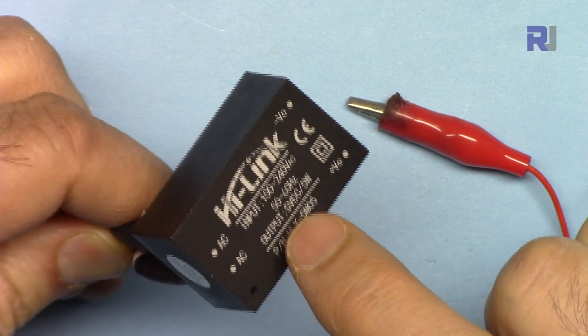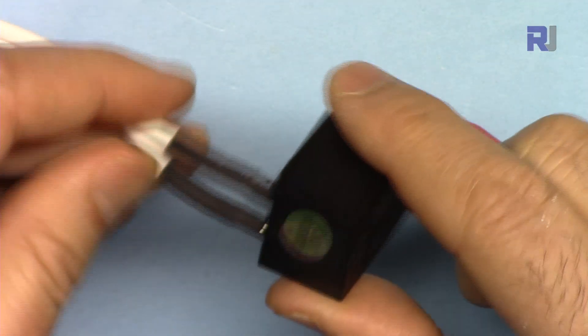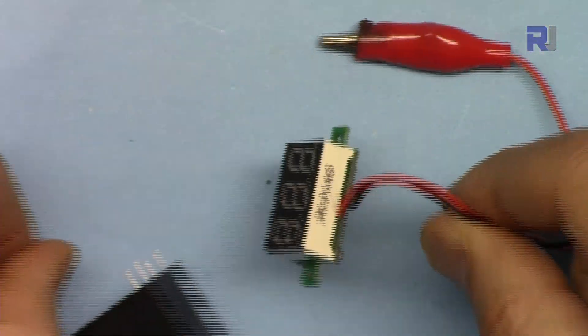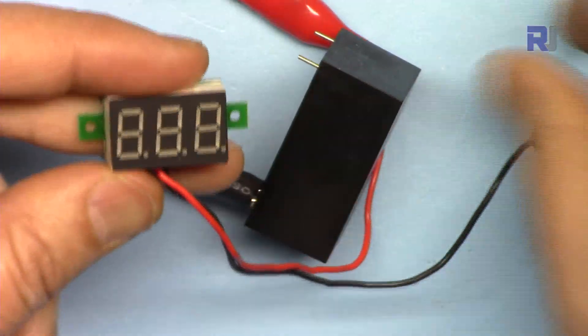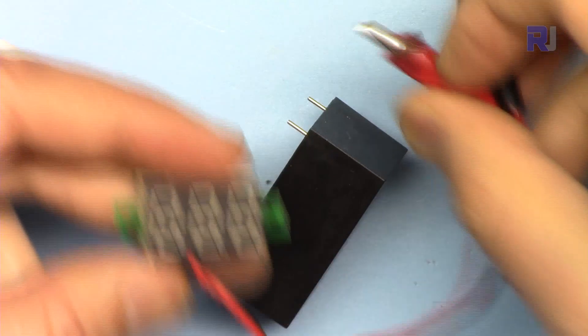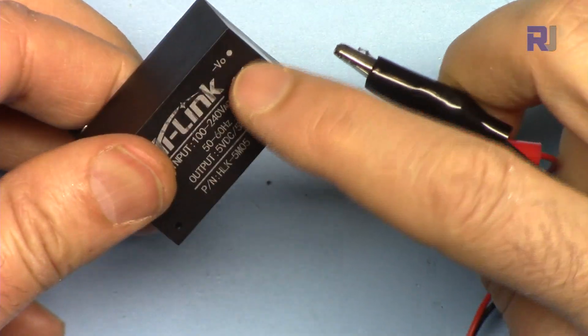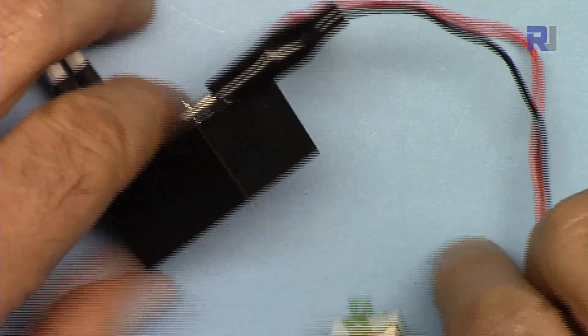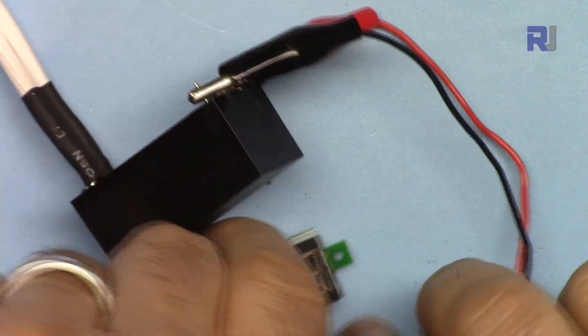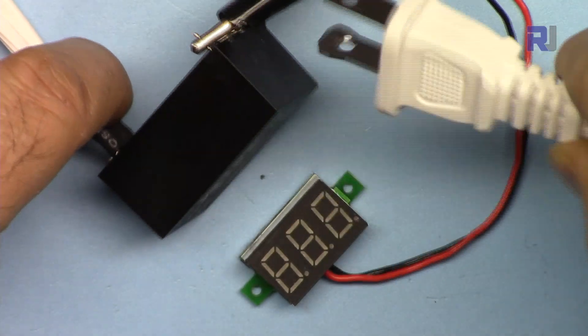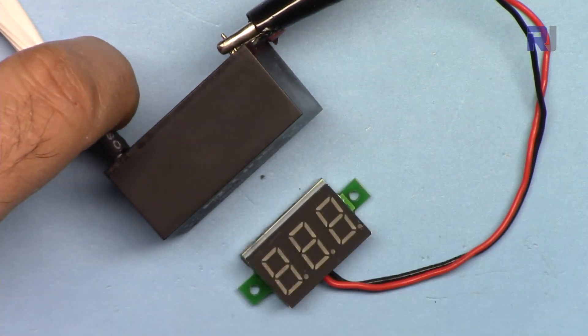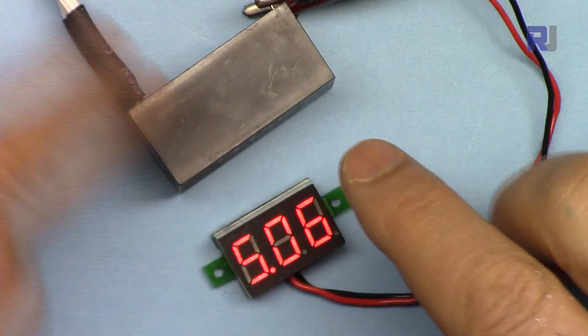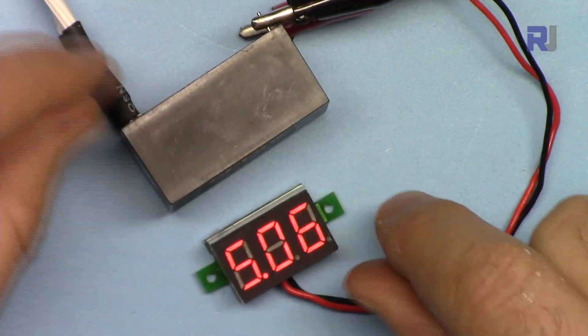Now I'm going to connect this 5 volts module to AC, and here is a tiny voltmeter that I'm going to connect negative and positive. This is the AC, I'm connecting it to 110 volts. The AC have been connected and this is 5 volts DC as per values shown here.